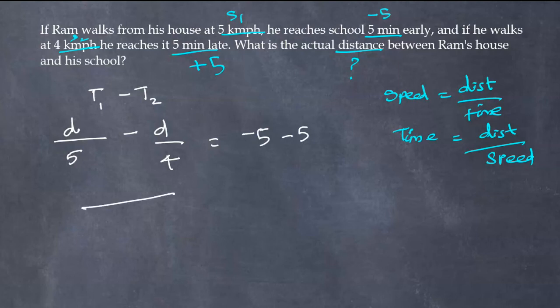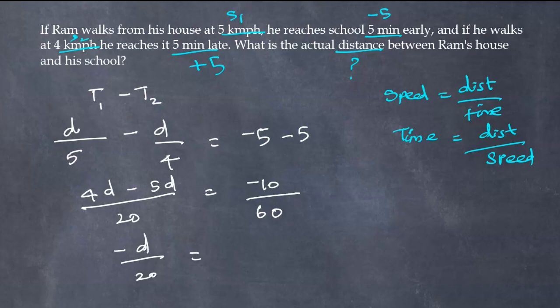So the LCM for 5 and 4 is 20. So 4D minus 5D equals minus 10 divided by 60. Since this is in terms of minutes, we are converting this into hours by dividing by 60.